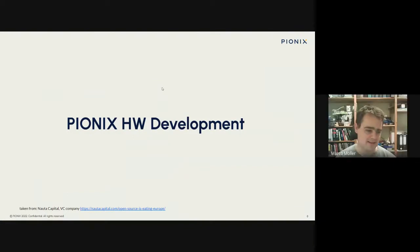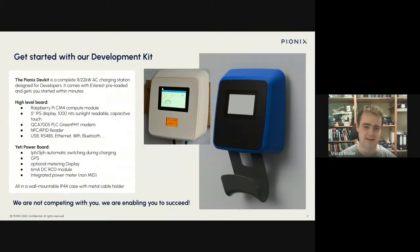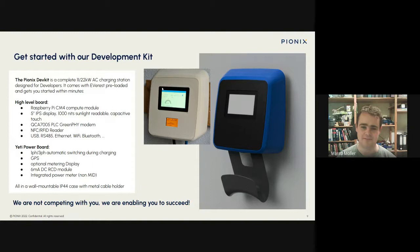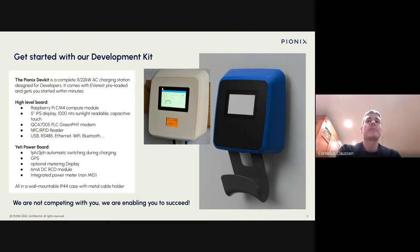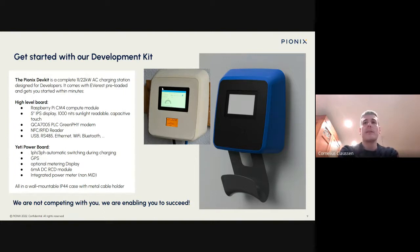The next part is a bit about what we actually do as a company. Until here it was focused on the open source project, but you might also be interested in why we're doing this. We hope to get a dev kit out there in summer. It's basically an AC charging box developed by Pionics, which serves as a dev kit especially for the EVerest stack. It includes a Raspberry Pi Compute Module — this is not a mass-producible wall box but the hackers' wall box, designed for people who really want to change and modify the software themselves.